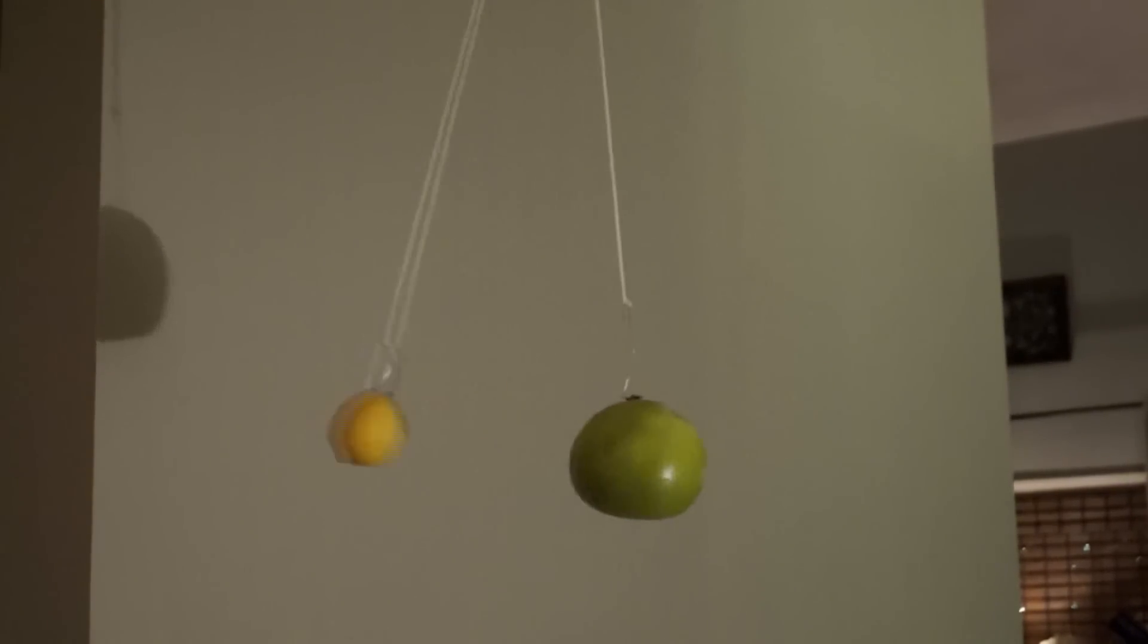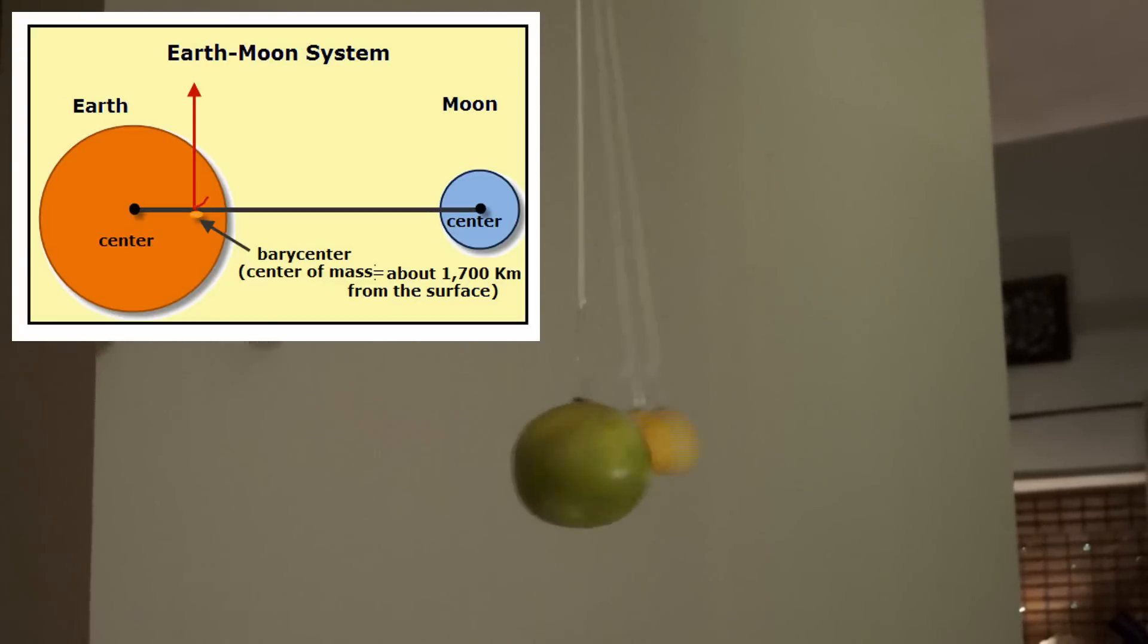We usually say that the Moon revolves around the Earth, but really, they both revolve around each other. They revolve around a point, which is the center of gravity of the two objects, called the barycenter.